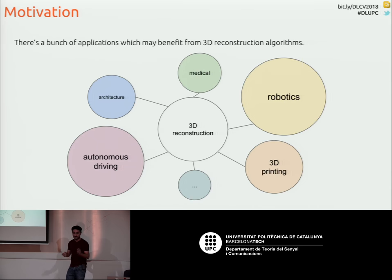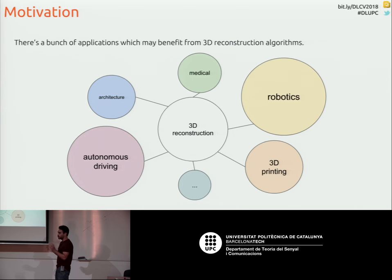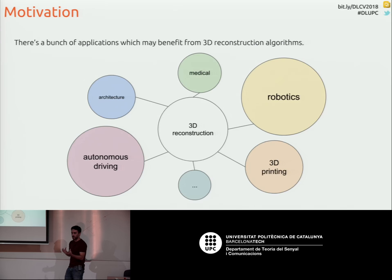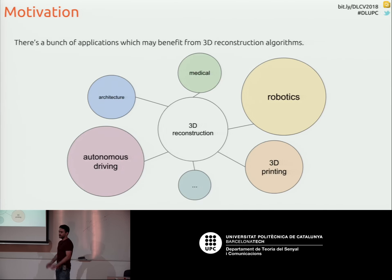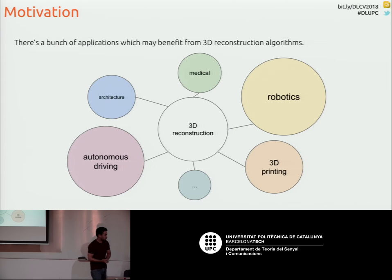For example, imagine a robot that wants to grasp an object — it needs to more or less know the shape of that object. Or even if it wants to navigate through an environment, it needs to know how the environment looks like. Autonomous driving will also benefit from that, and 3D printing as well, so there are many many applications.